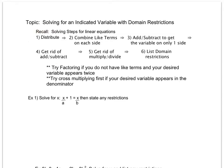These are just the steps you learned back in Algebra 1 for solving linear equations. You distribute, you combine like terms on each side, you add or subtract so that you have a variable on only one side. You get rid of add or subtract, you get rid of multiply divide, and I'm going to add this step here. We're going to list domain restrictions.